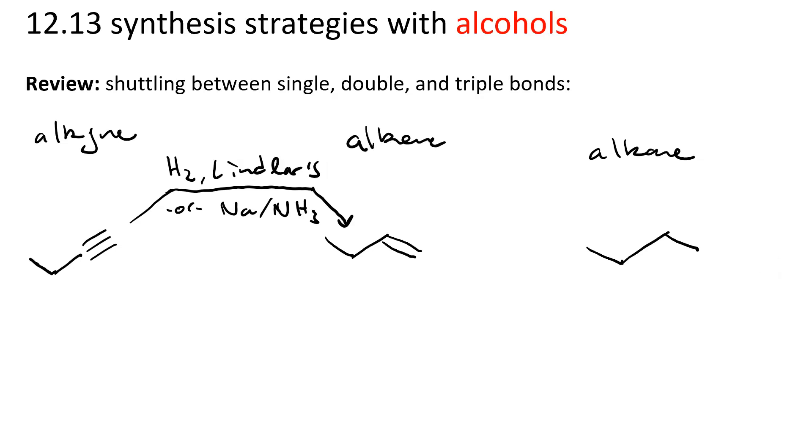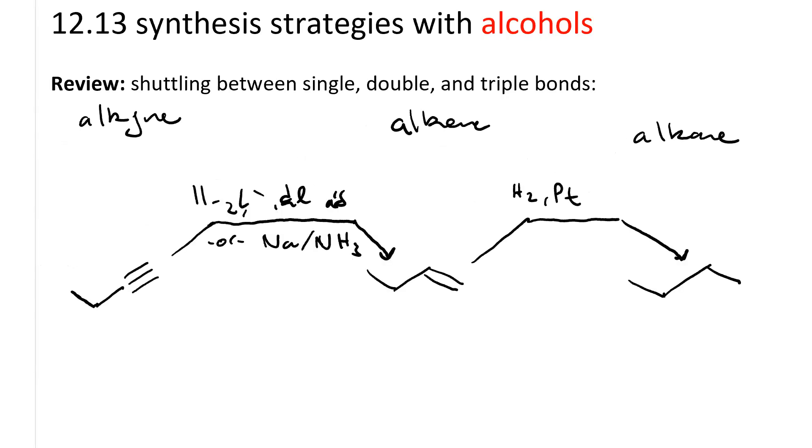And then to go all the way to the alkane from the alkene, we just do catalytic hydrogenation, H2 Pt. Catalytic hydrogenation would take us all the way from the alkyne to the alkane without stopping at the alkene.